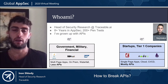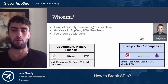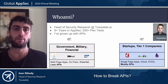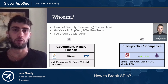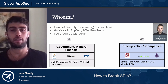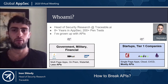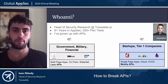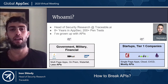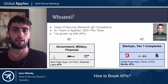A quick background about myself: my name is Inon Ishkedi. I'm the head of security research at Traceable AI, a startup in the field of cloud-native application security. I have 8 years of experience in application security.